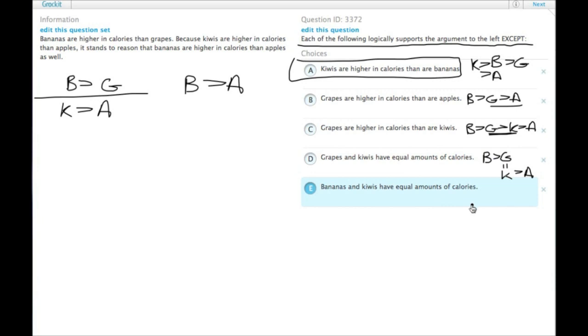Finally, bananas and kiwis have equal calories that we have B greater than G, and it's equal to K, which is greater than A, which means B is greater than A.